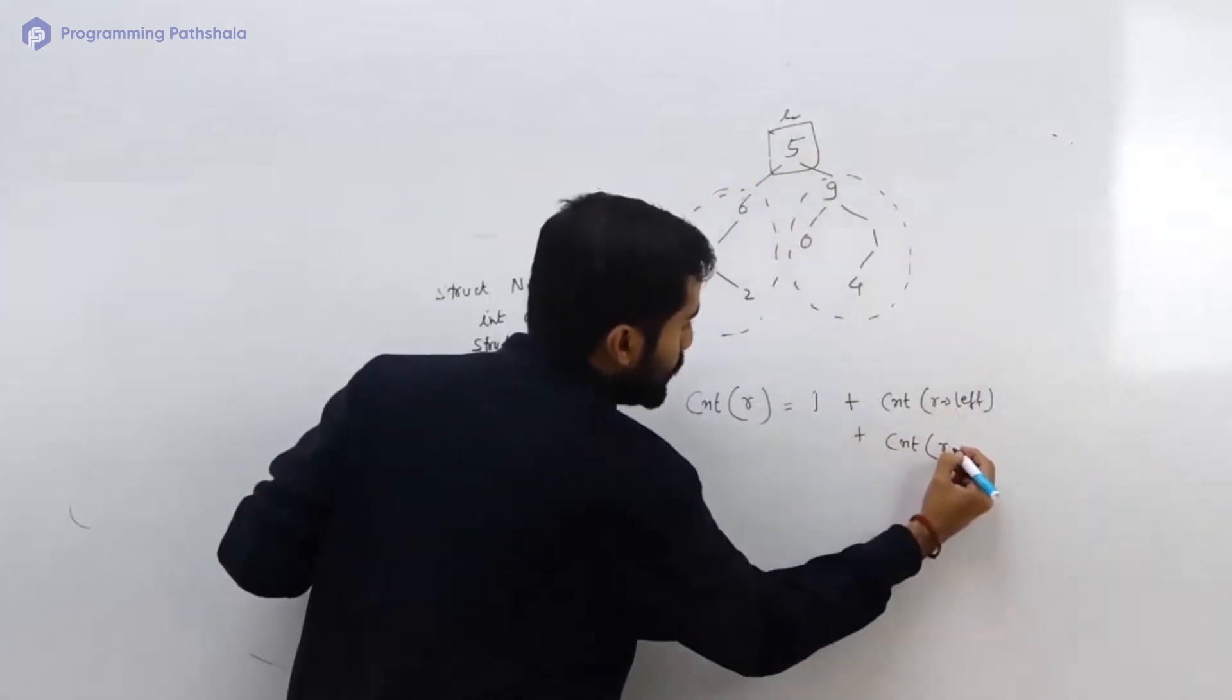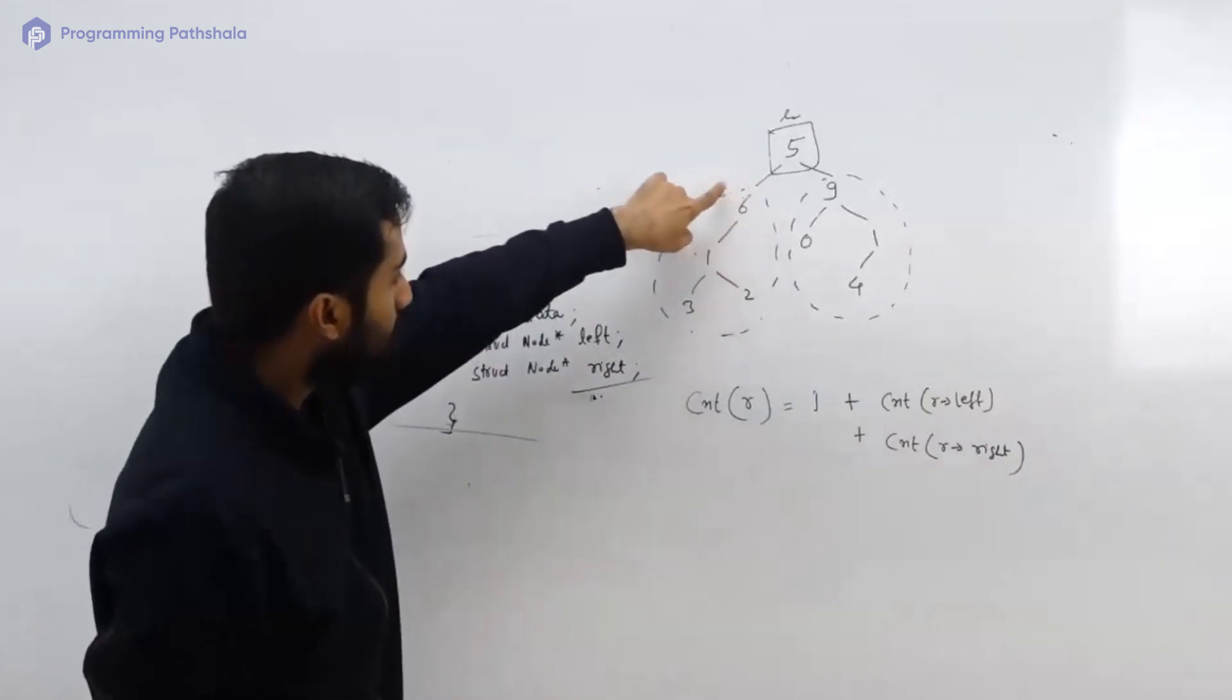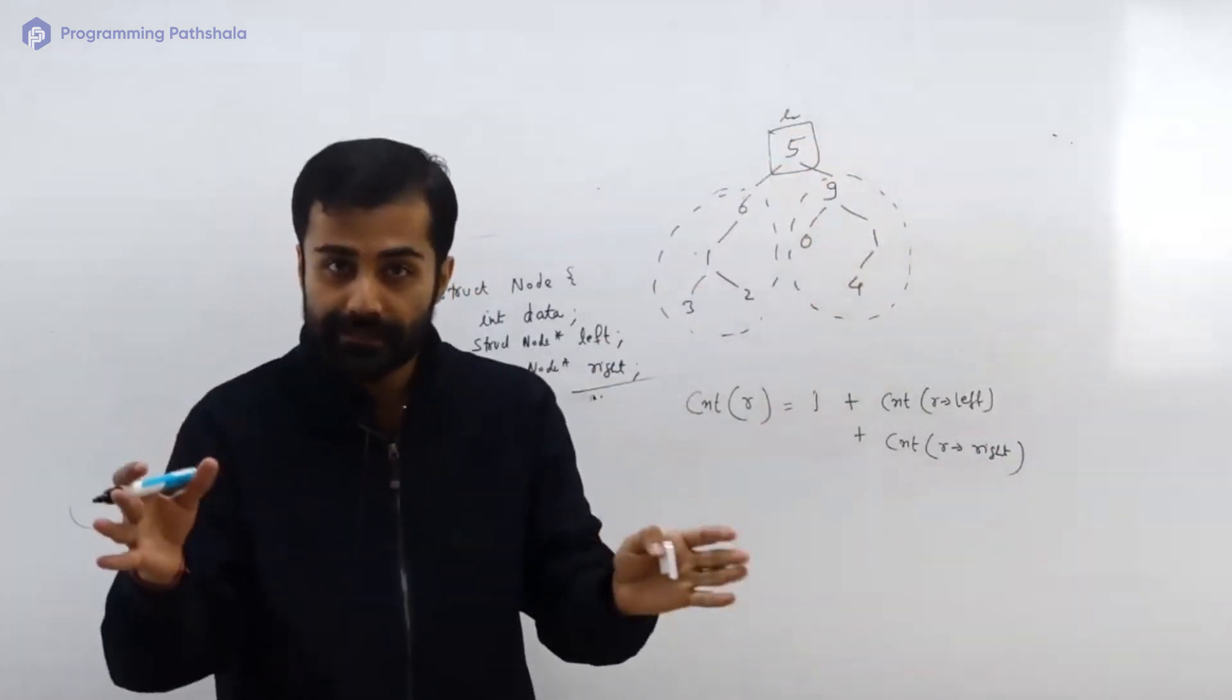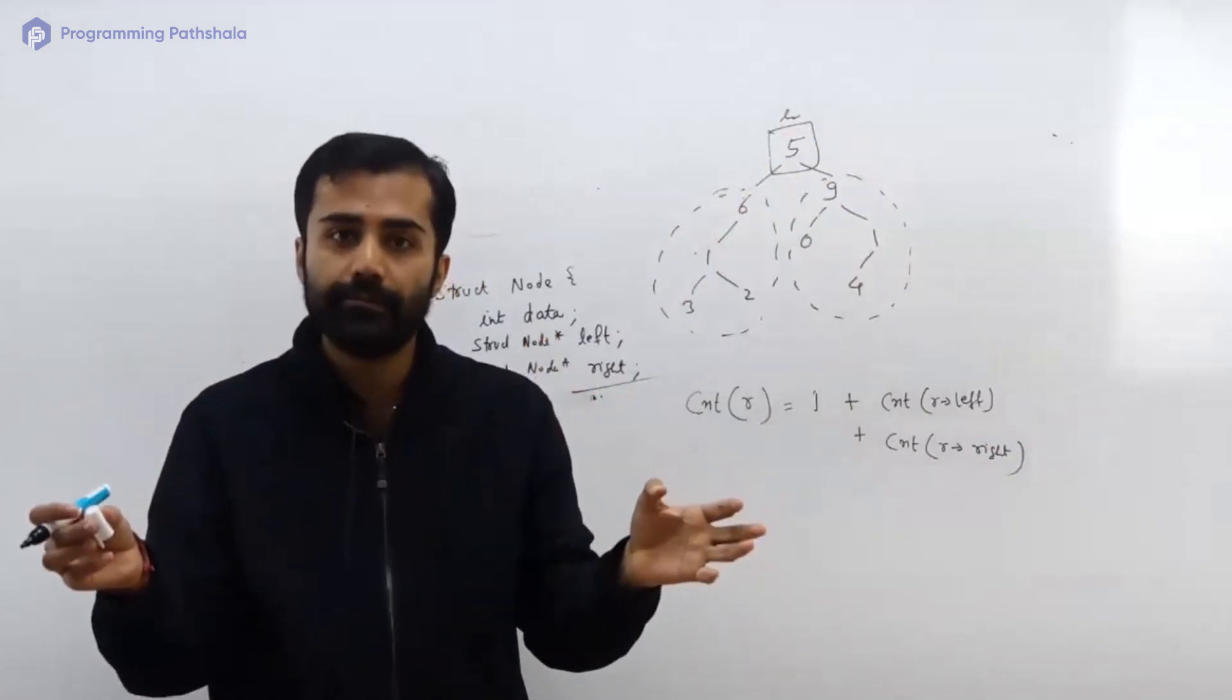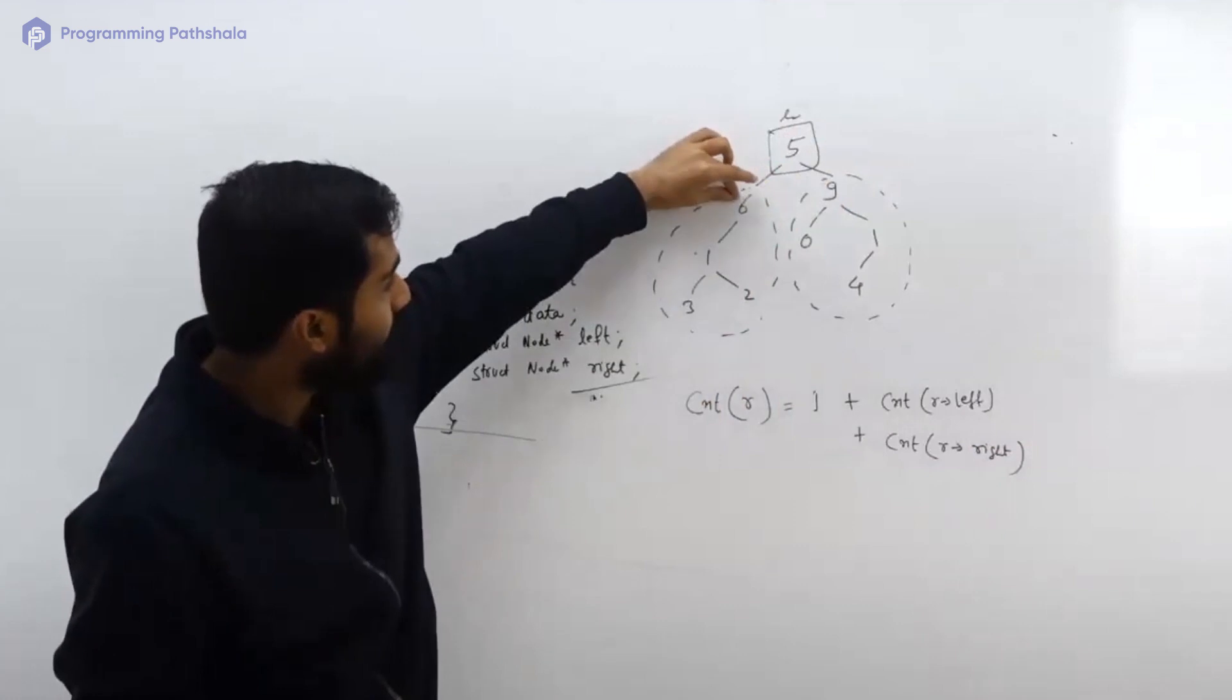You know this is also called a subtree, this is also called a subtree. The way you have a subarray, you have got subtree also. And for every tree or subtree, its representative is its root, because you have to be at root, then only you can travel all the other nodes coming down from it.